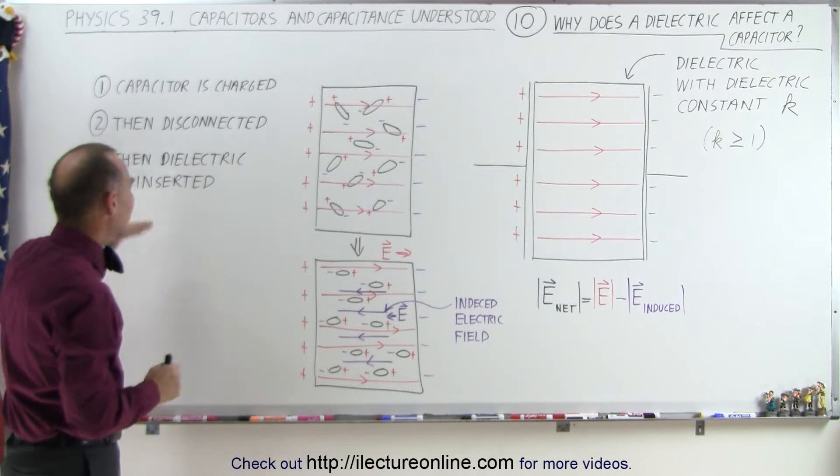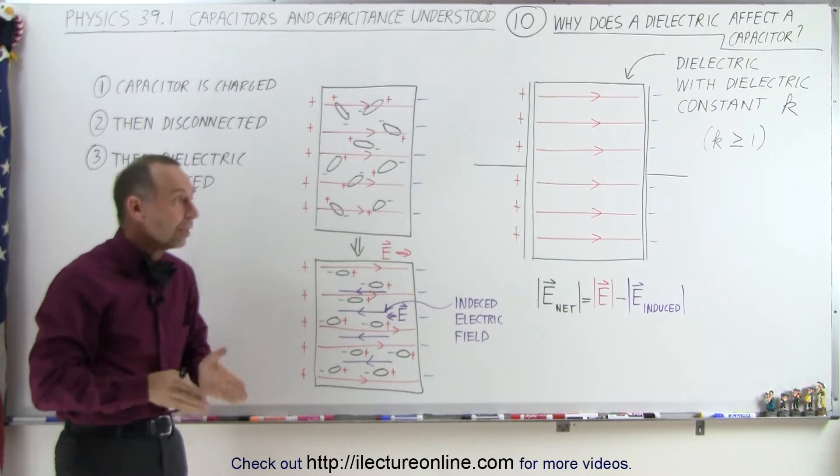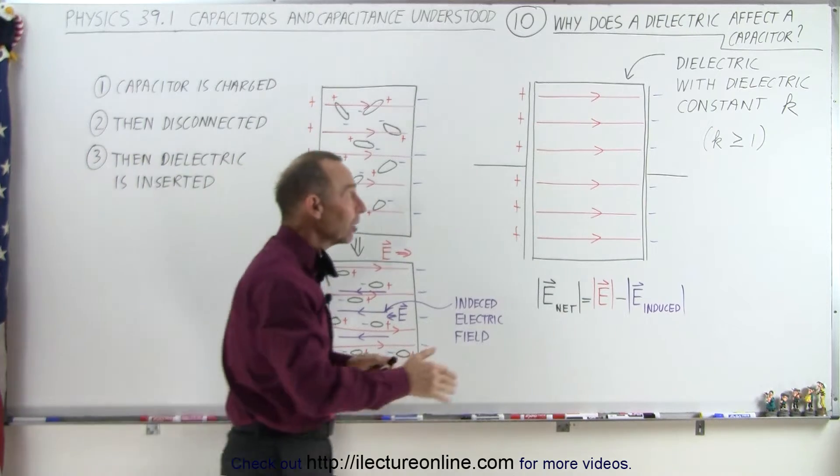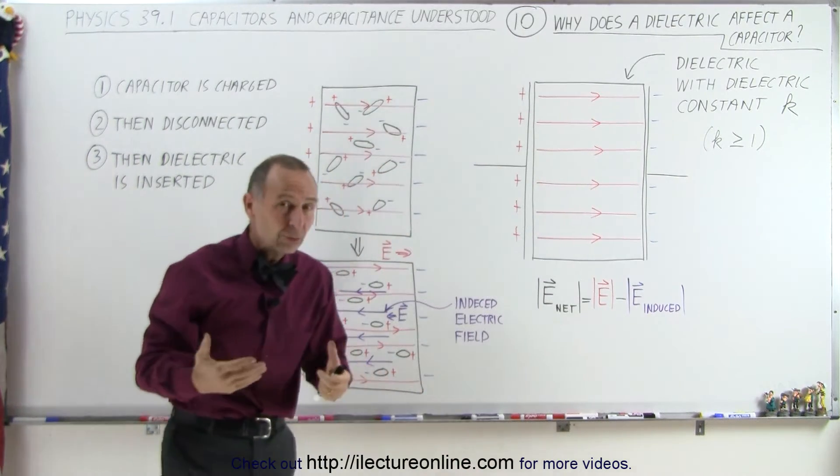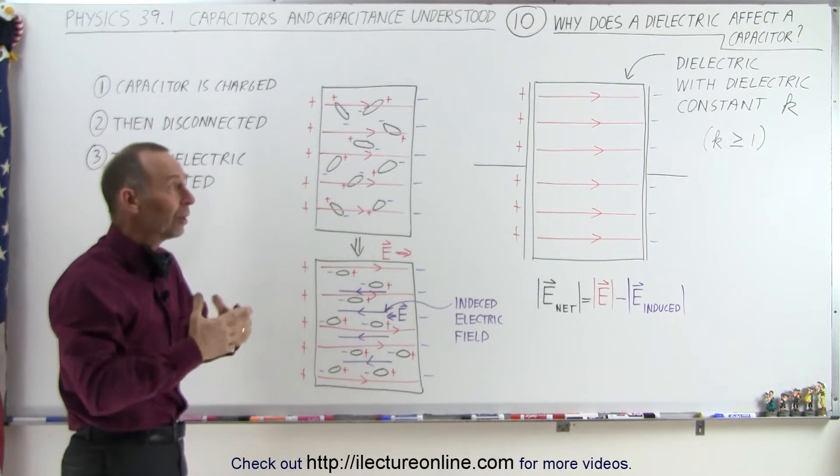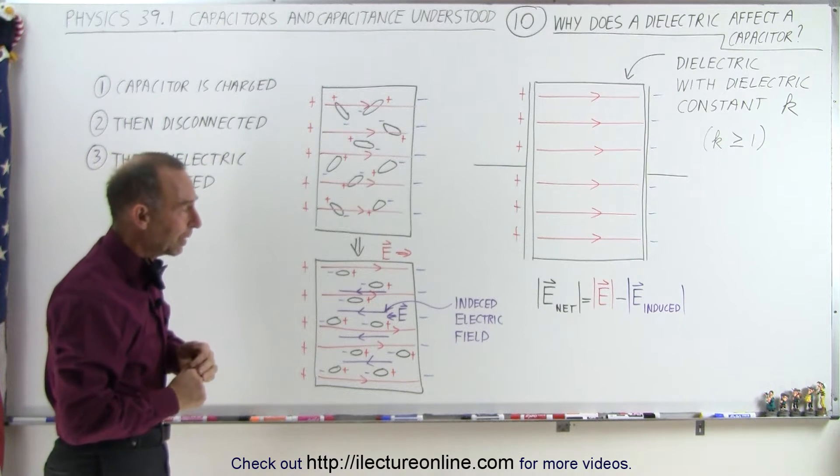After we disconnect the capacitor, we're now going to insert a dielectric material with a constant typically greater than 1. A dielectric constant, if it's equal to 1, then we're in free space somewhere, not even air between the capacitor plates.